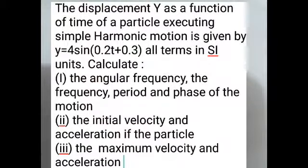All terms are in SI units. So in this question we need to write it out. Let's write it out first. Let's know what we're working with. So y equals 4 sine of 0.2t plus 0.3.